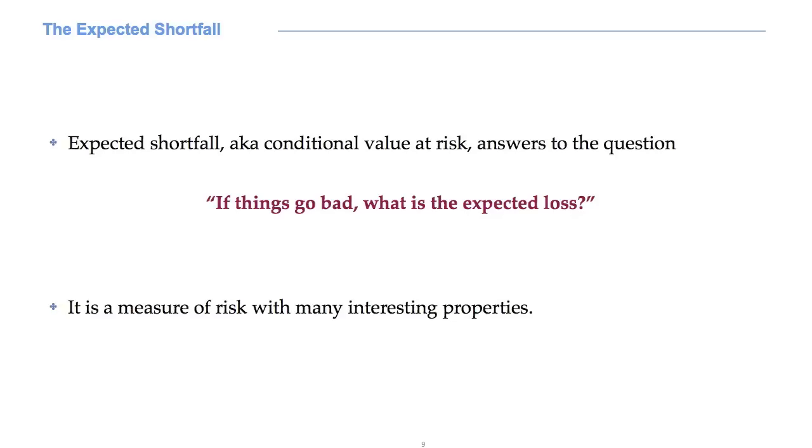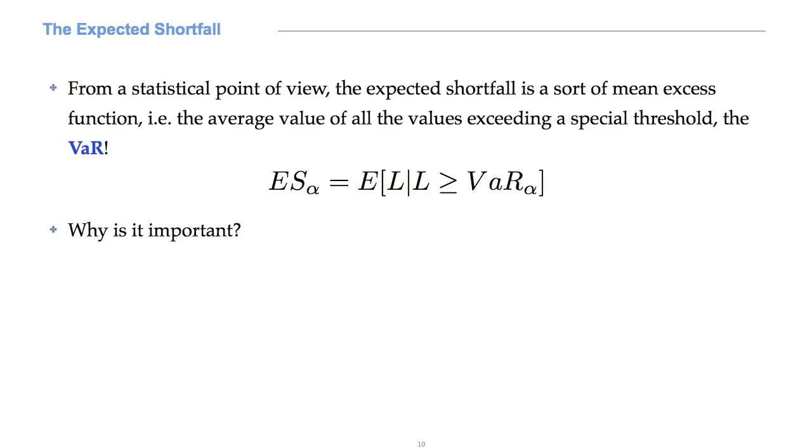The expected shortfall is the statistical quantity that tries to answer this question. From a statistical point of view, the expected shortfall at level alpha is a sort of mean excess function, that is to say, the average value of all the values exceeding a special threshold, the VaR alpha. Why is the expected shortfall important?